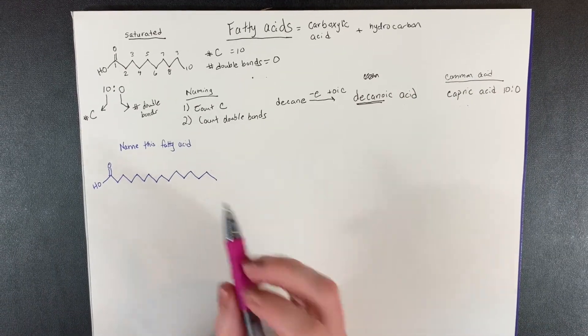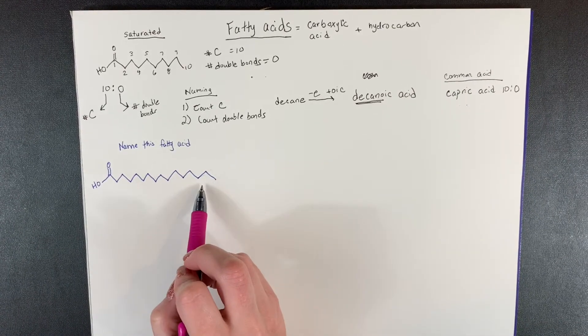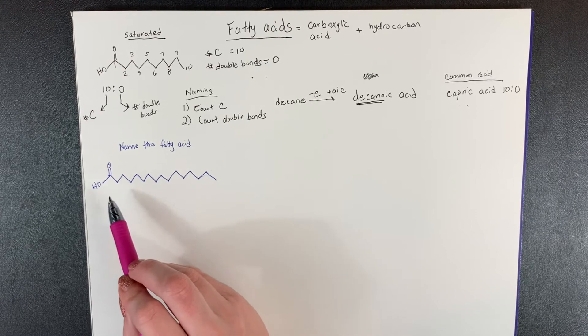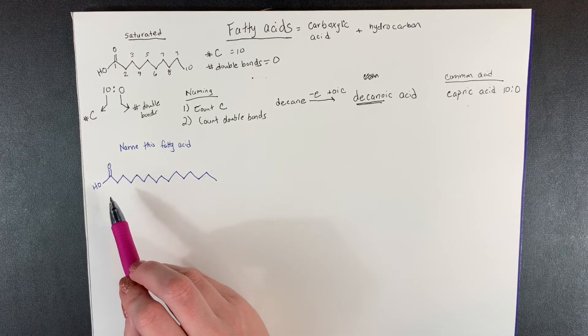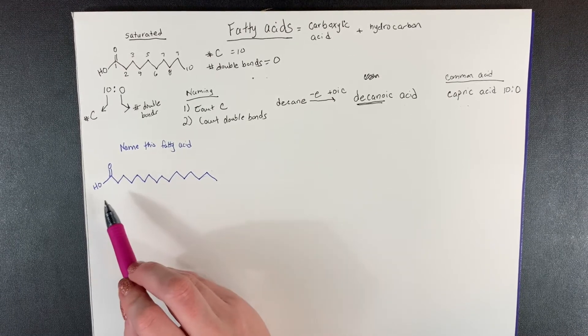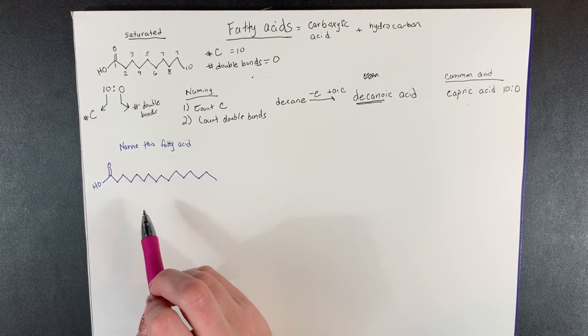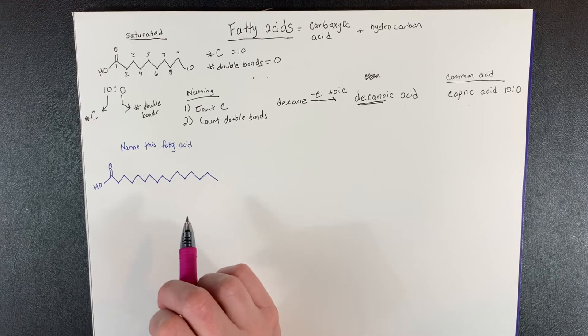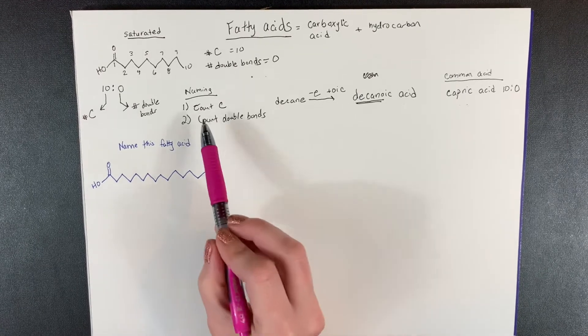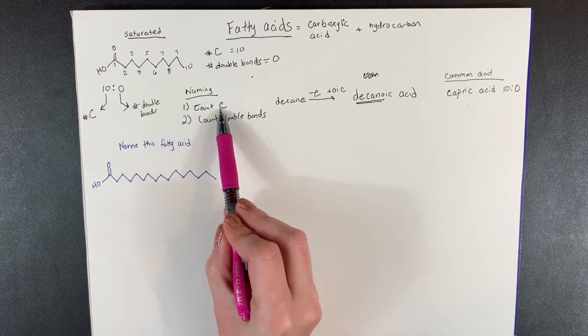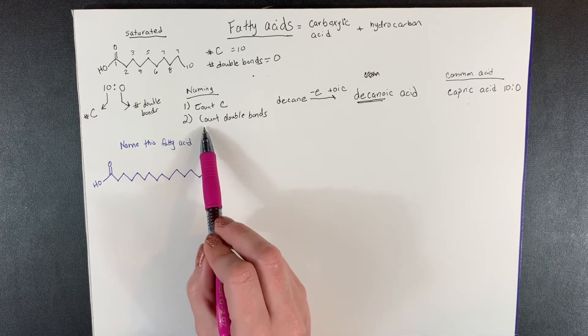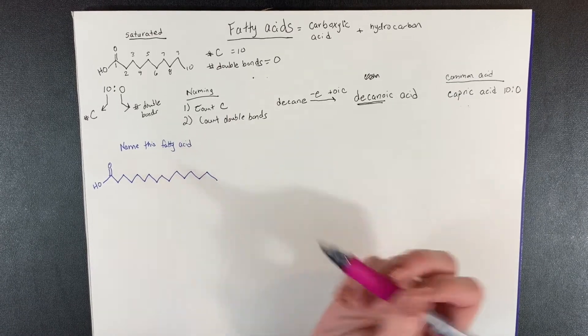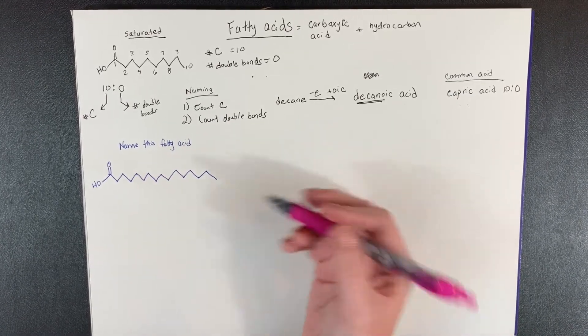All right, now say on a question, I give you this structure of a fatty acid, and I could ask you a couple things. I could say, what's the name for this? How many double bonds is there? How many carbons? What's the common name? So let's start figuring this out. So like I said, the first step you usually want to follow is count the number of carbons, then count the number of double bonds.